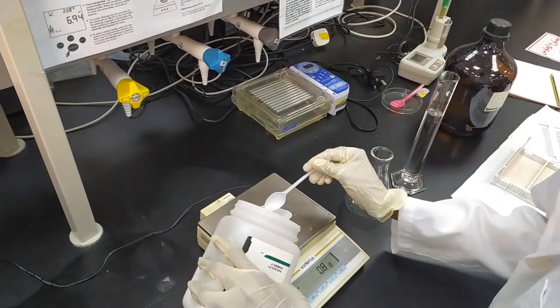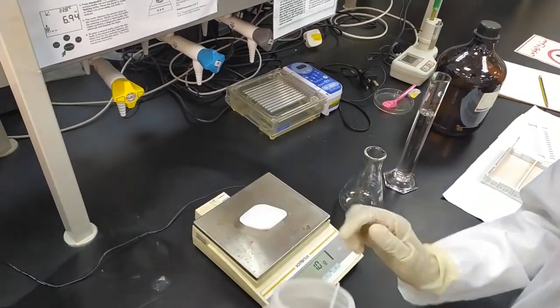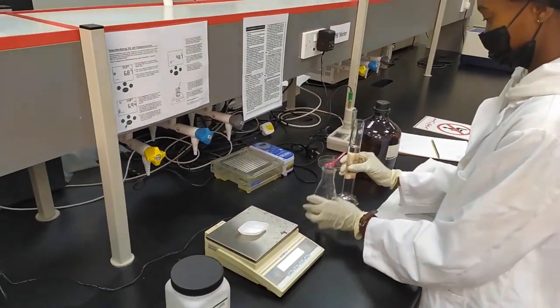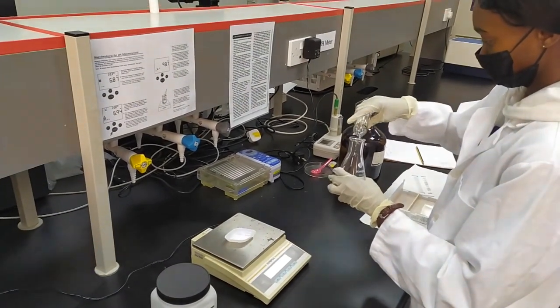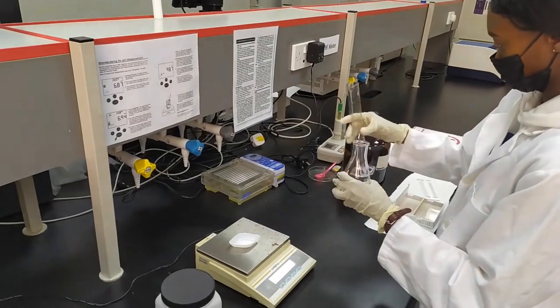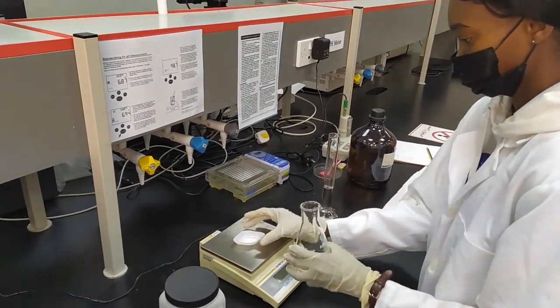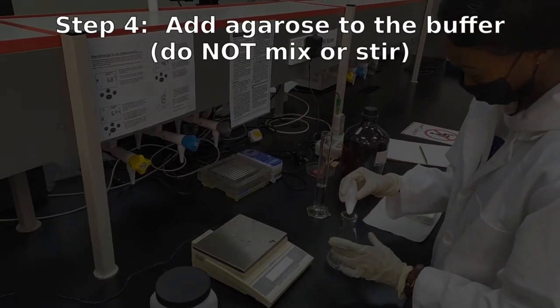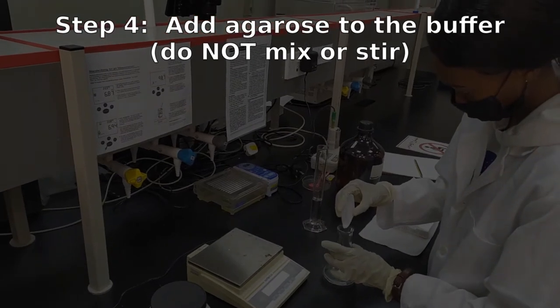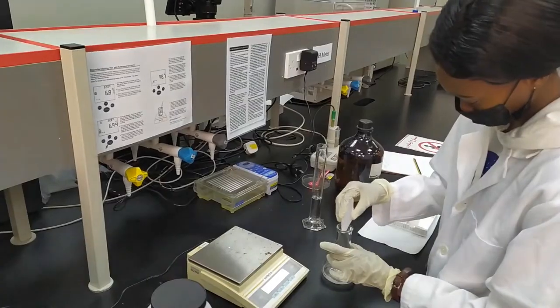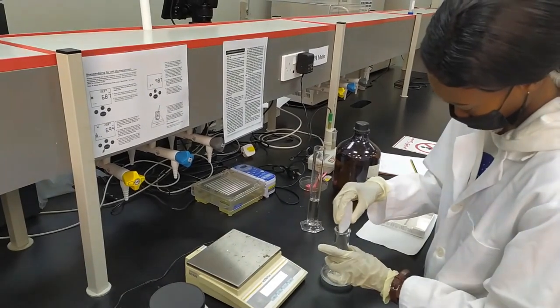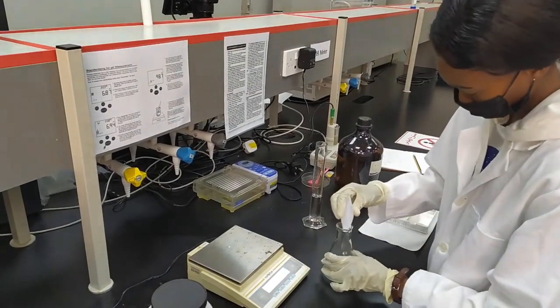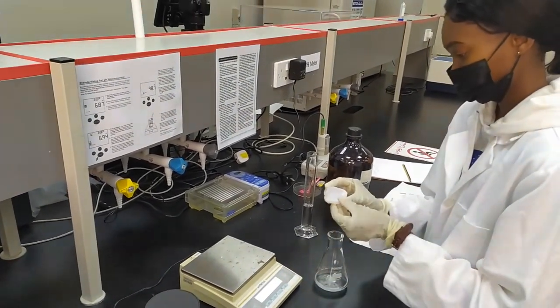Now, once you have the reagent weighed out, you're going to transfer that into a flask. In general, you want to start off with a little bit of the solvent inside the flask whenever you're making any solution. And then, you're going to add your reagent, so in this case, the agarose. Now, agarose does not dissolve at room temperature, so it's going to stay in powdered form. And you'll notice that cognac has actually saved a little bit of the buffer pour after adding the agarose. This way, she can wash down the sides of the flask to make sure that all the agarose goes to the bottom.